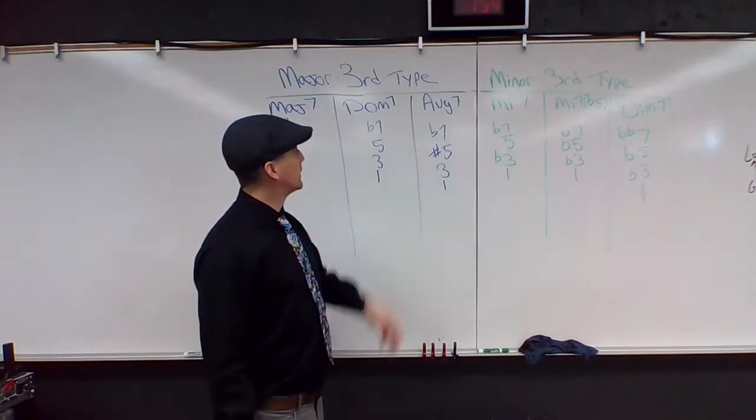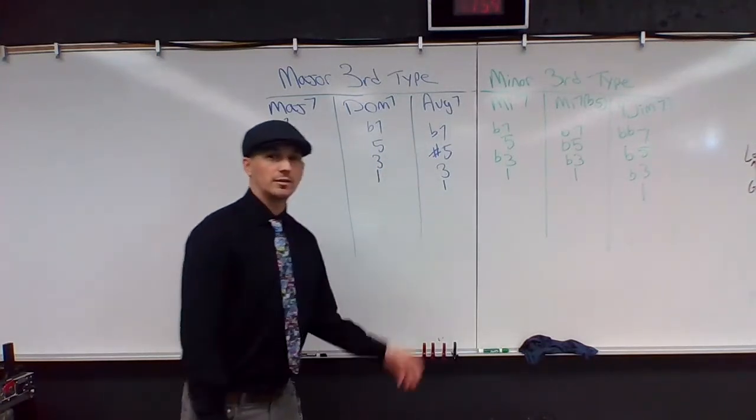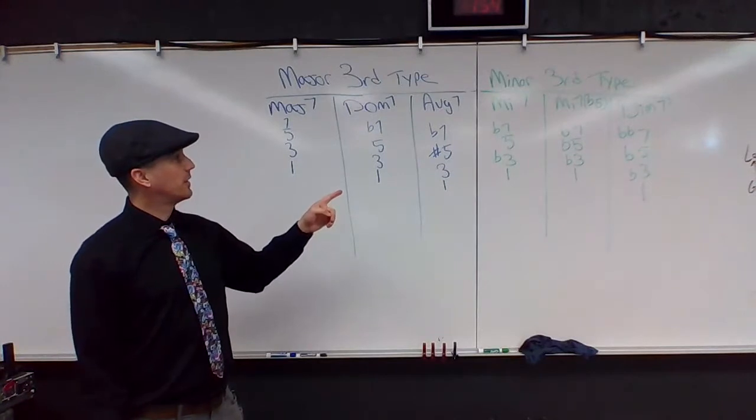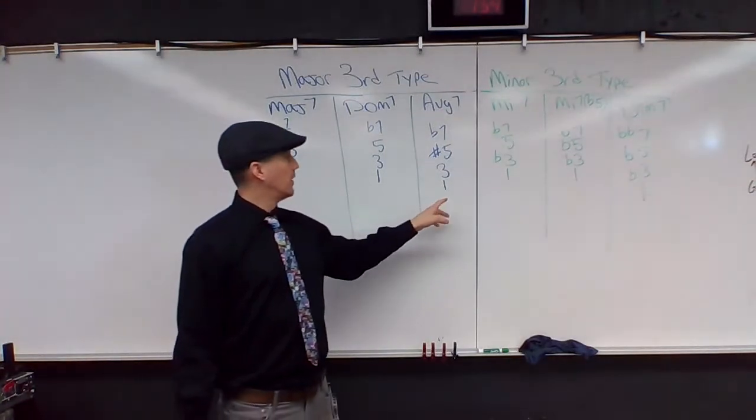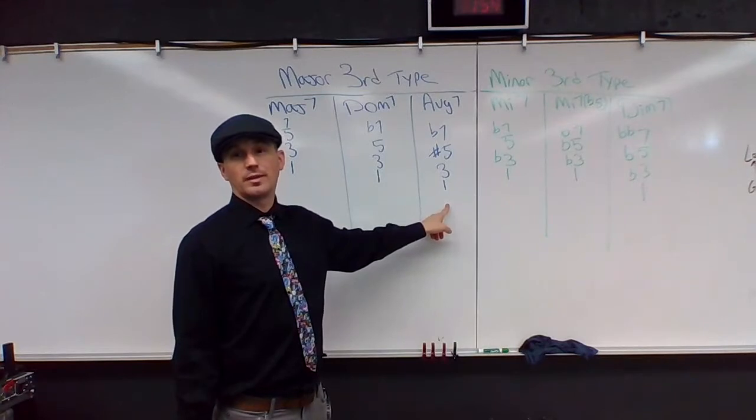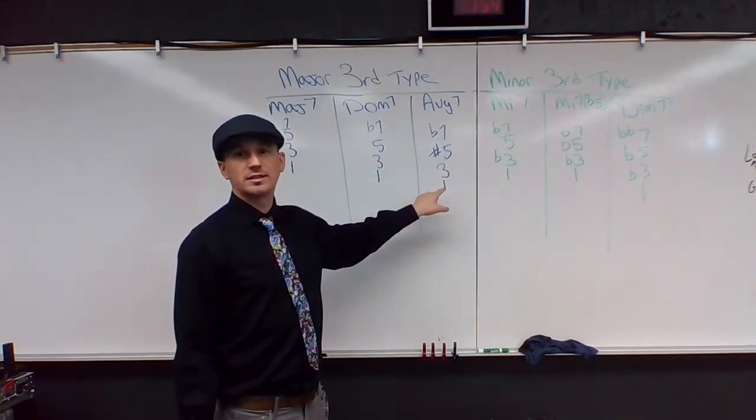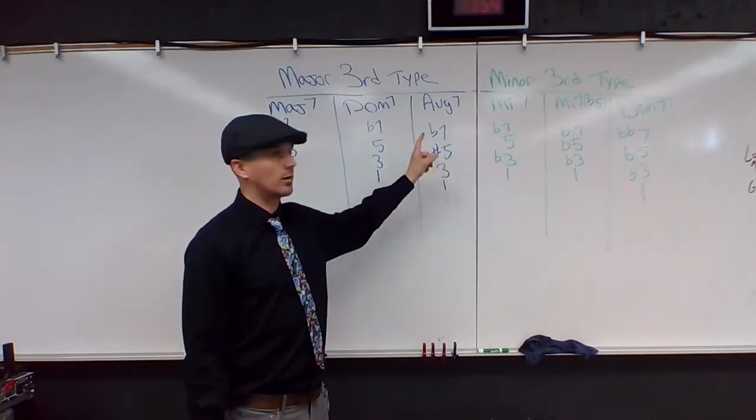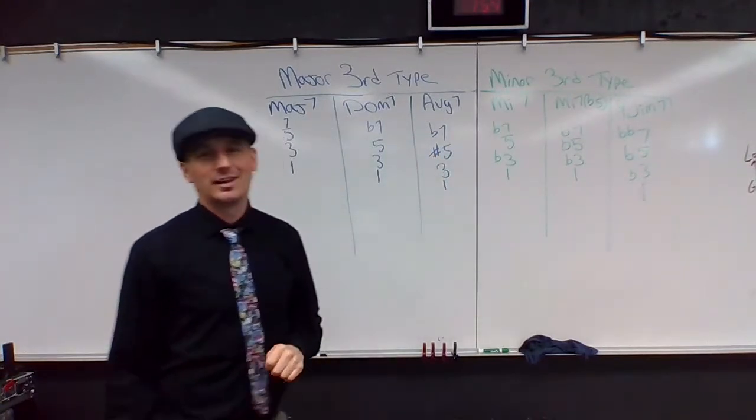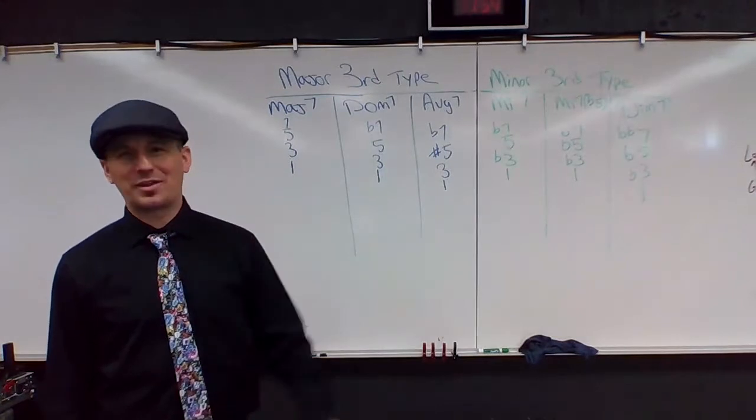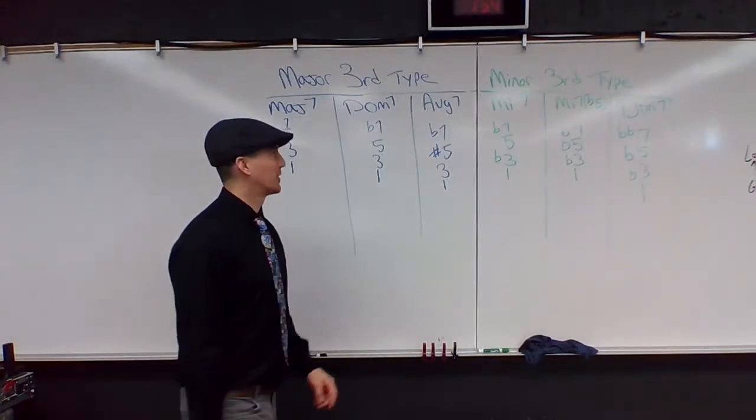Then we have an augmented seven. Take the major seven, we sharp the fifth, and we flat the seventh. This isn't quite as common until we get to our extensions. We'll talk more about this one. This is kind of a clunky way to say it. It's not very elegant. One, three, sharp five, flat seven. So I'll give you more of my thoughts on that when we get to our extensions and alterations.